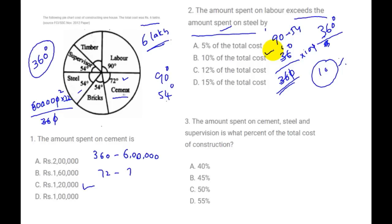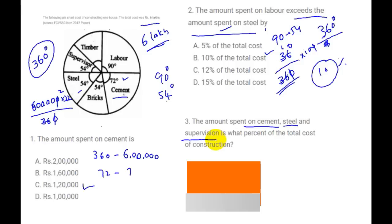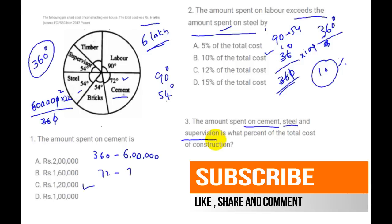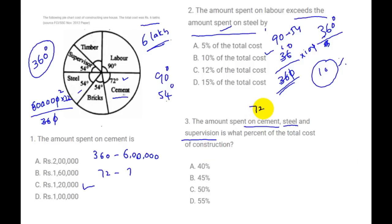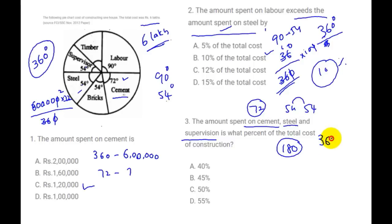Next question: the amount spent on cement, steel, and supervision is what percent of the total cost of construction? Cement is 72 degrees, steel is 54 degrees, supervision is 54 degrees. Total: 54 plus 54 is 108, and 108 plus 72 is 180, which is half of 360. Half of 360 equals 50%. So within a fraction of seconds, we can answer correctly.